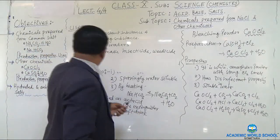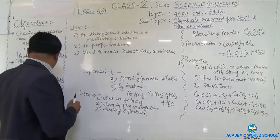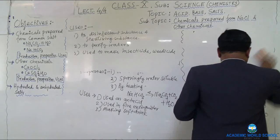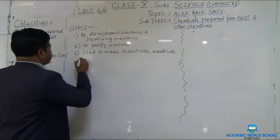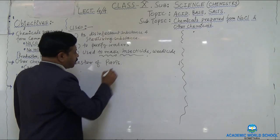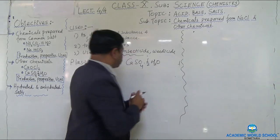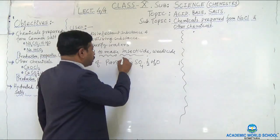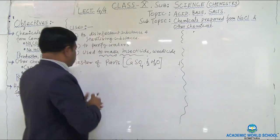After bleaching powder, we learn about calcium sulfate hemihydrate — CaSO₄·½H₂O — known as plaster of Paris, or POP. Plaster of Paris is prepared from gypsum. The chemical formula of gypsum is CaSO₄·2H₂O.